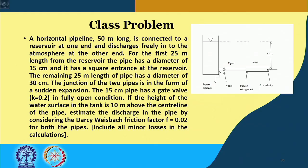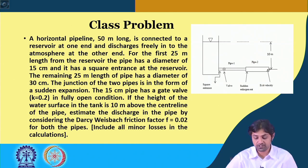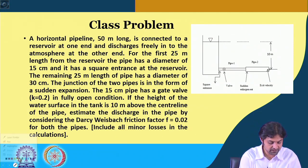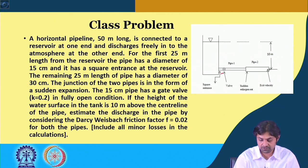Welcome back. In the last class, we finished the lecture by introducing a problem that is supposed to be done in the class. There is a reservoir connected to a pipe. The pipe is in 2 different diameters. The total length is 50 meters, but this section is 25 centimeters having a different diameter and the other section is having a different diameter.